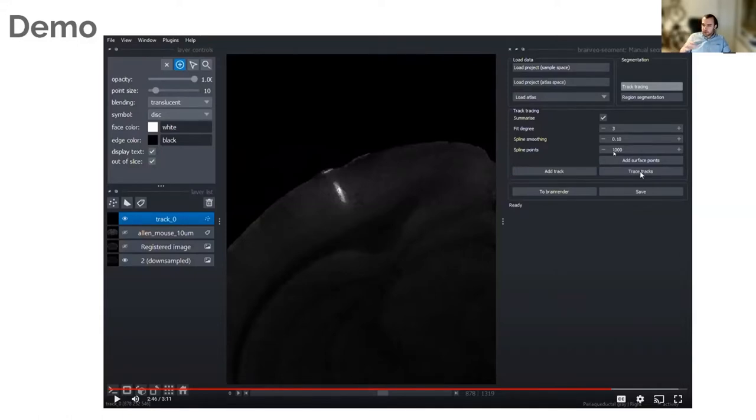This will correspond to how many different points along that track the brain region will get reported at. Because it's a general purpose tool, it's not specific to Neuropixels. If you have a one centimeter track and you want to just report 10 points along it every millimeter, you choose 10 here. If you wanted to do it every micron, you do 10,000.